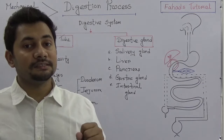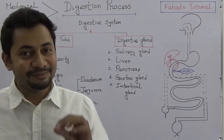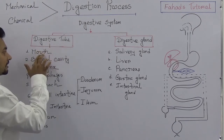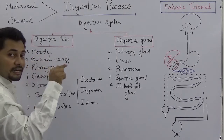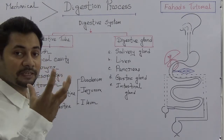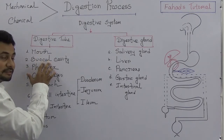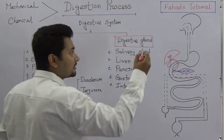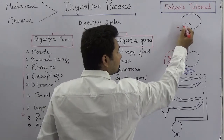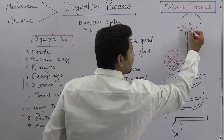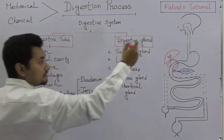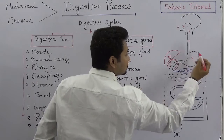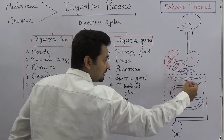These teeth are very strong and help us break down food particles into small pieces. The digestive tube starts from the mouth, then inside we have the buccal cavity — the cavity means the space. Then we have the pharynx, then the esophagus, and after the esophagus the bag-like organ is the stomach.